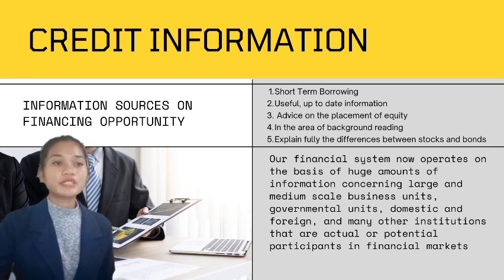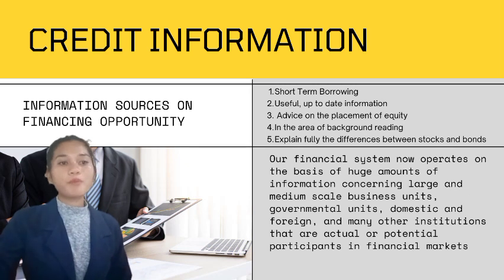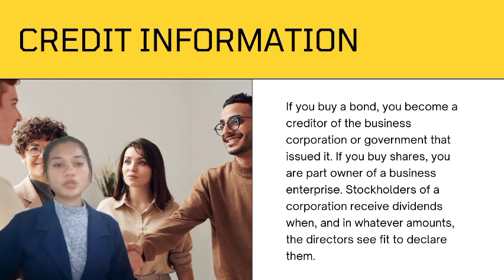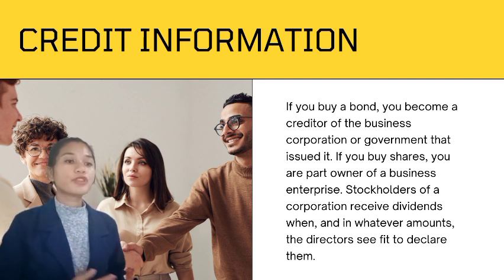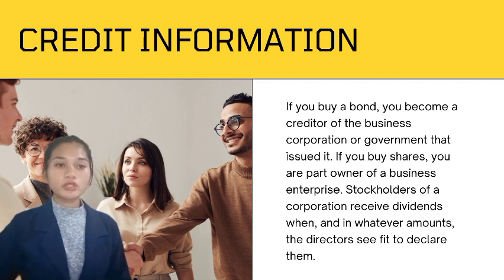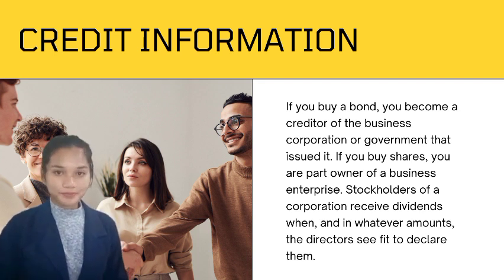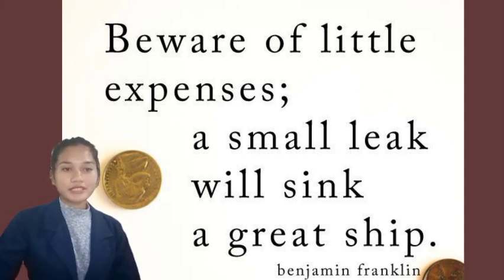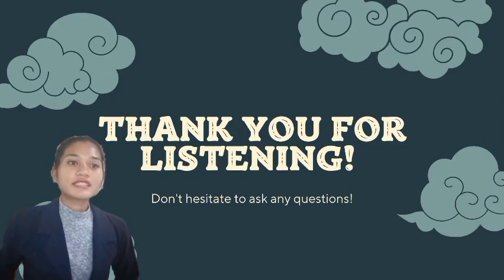The last is to understand the differences between stocks and bonds — the reason why one and not the other is issued and how the issue is regulated. When you purchase a bond, you join the company, organization, or government that issued it as a creditor. Bonds provide a pledge to provide bondholders with periodic interest payments of specified amounts. Dividends are paid to stockholders of a corporation when and in whatever quantities the directors deem appropriate. According to Benjamin Franklin, beware of little expenses — a small leak will sink a great ship. Thank you and God bless. See you in my next report!